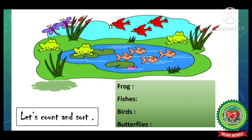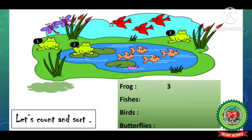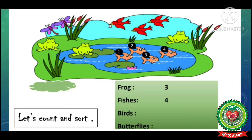Let us see one more example. Here you can see there is a pond and a scene of a garden. What are the things in this picture? Frogs, butterflies, birds, fishes, plants — many things are there. Now we will sort them out. How many frogs are there? 1, 2, 3 — and in front of frogs we will write 3. Similarly, how many fishes are there? 1, 2, 3, 4 — so in front of fishes we will write 4.